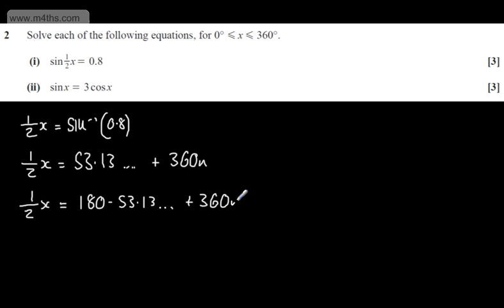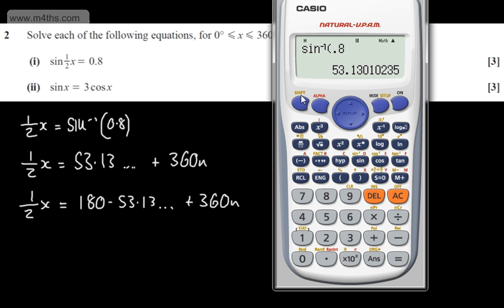We're only interested in solutions for x between 0 and 360. So if I consider the first solution, I'm going to multiply both sides of this equation by 2. I'll store this in the calculator: shift, store A.